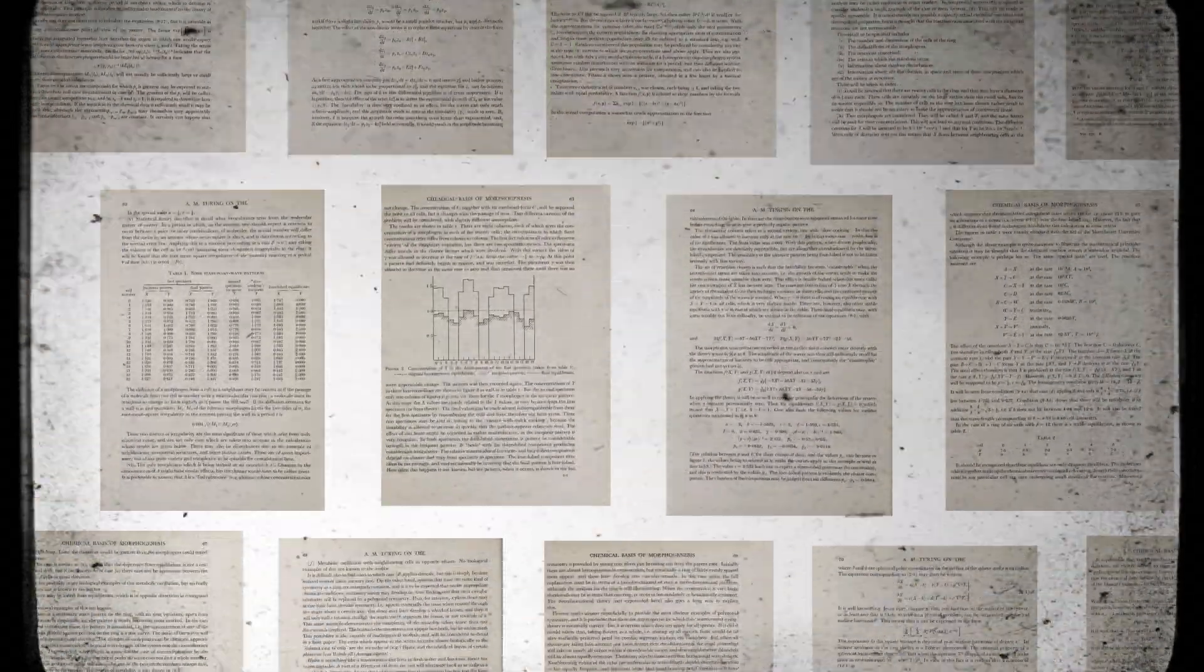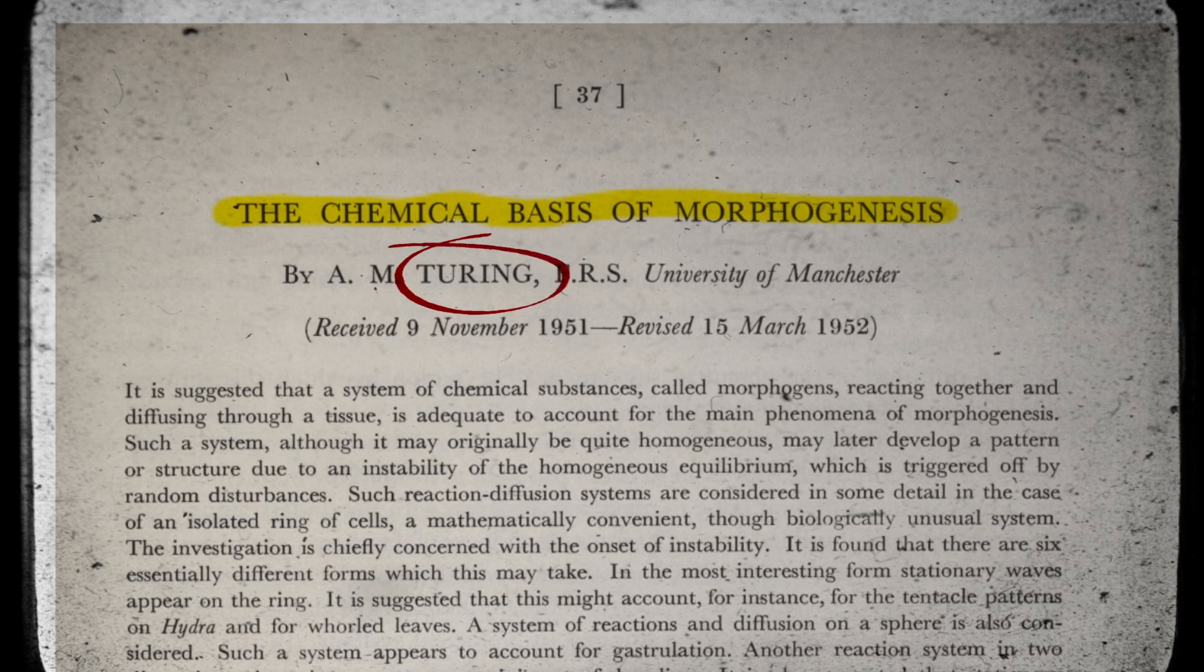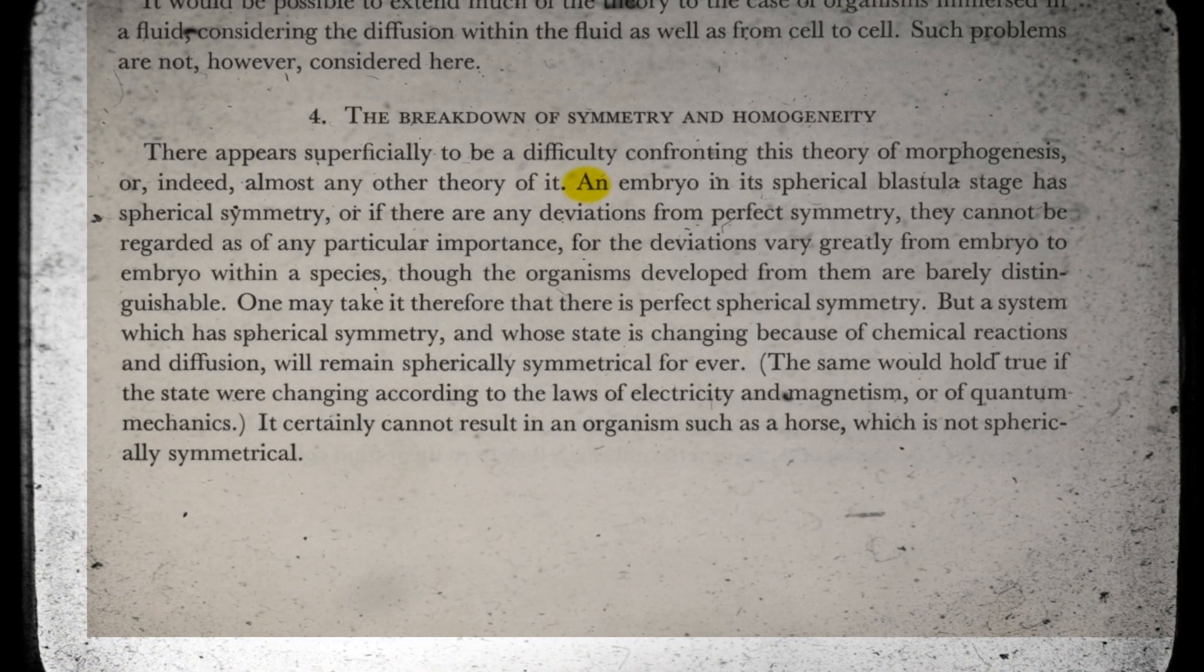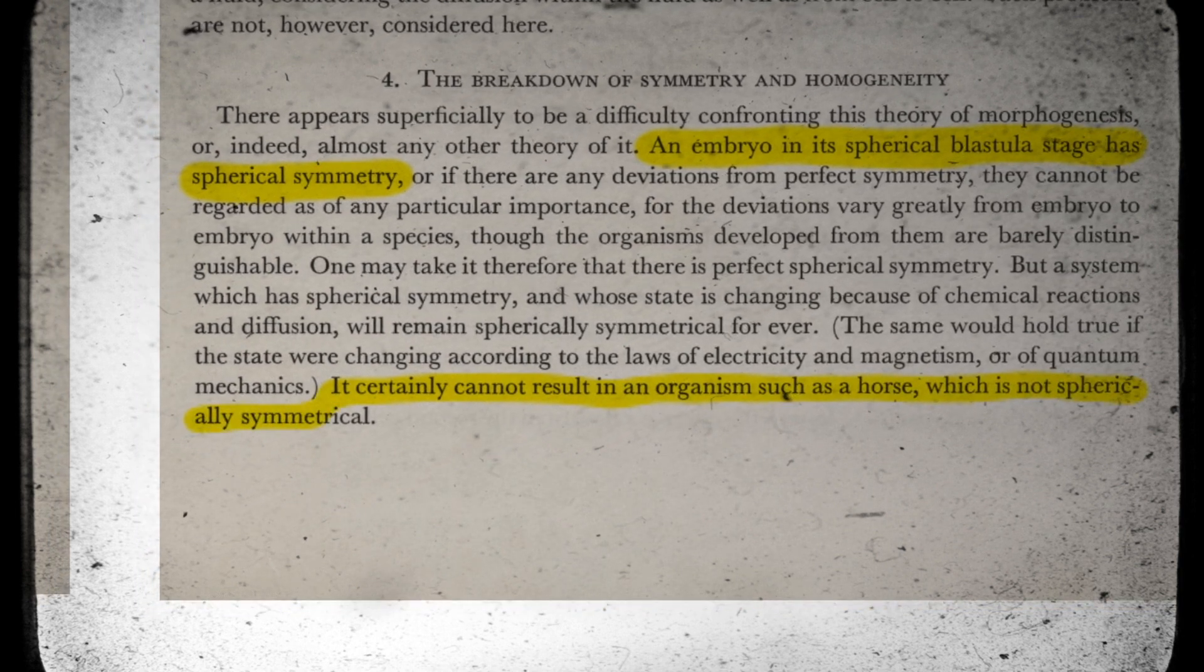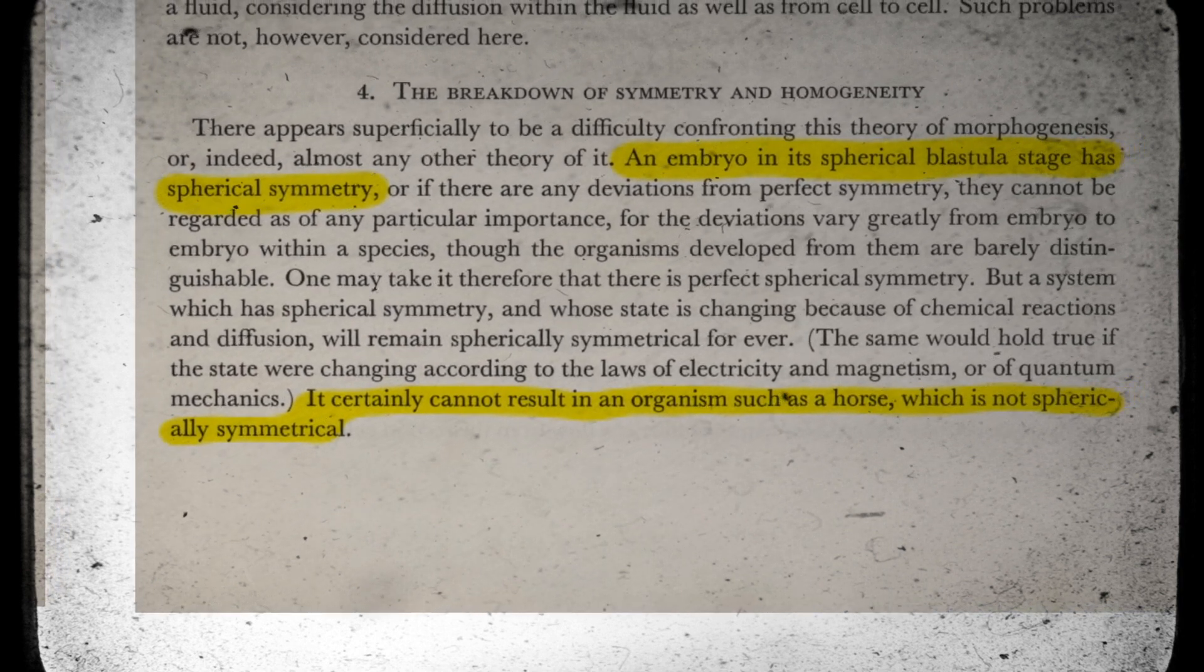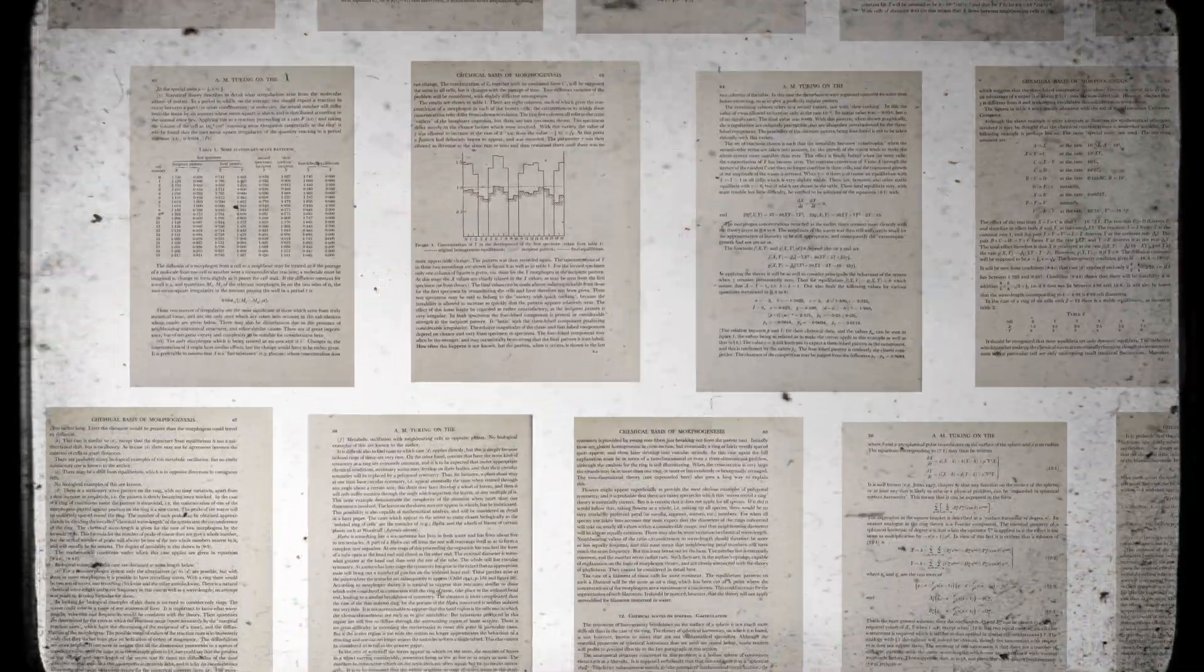In 1952 Turing published an article titled The Chemical Basis of Morphogenesis, in which he states an embryo in its blastula stage has spherical symmetry, which certainly cannot result in organisms such as a horse, which he points out is not spherically symmetric. He asks himself, how can from an embryo, which is a symmetrical mass of cells, develop organs such as limbs and eyes at the precise location?